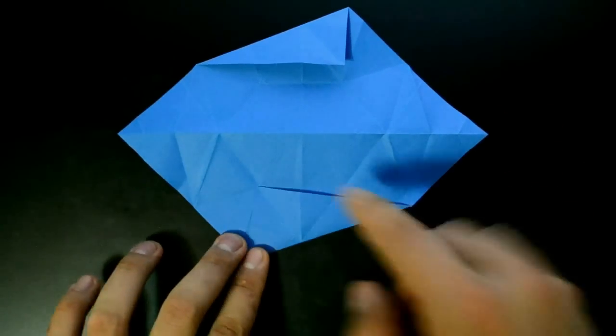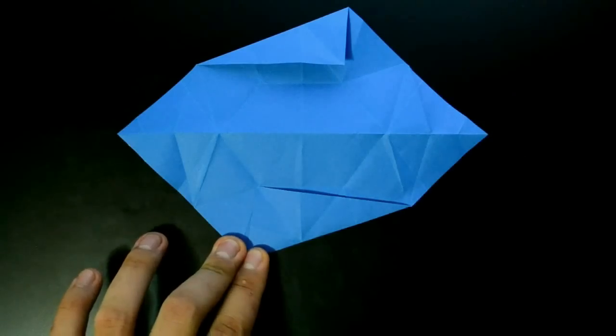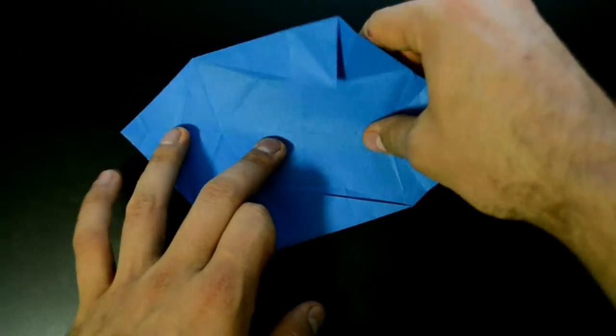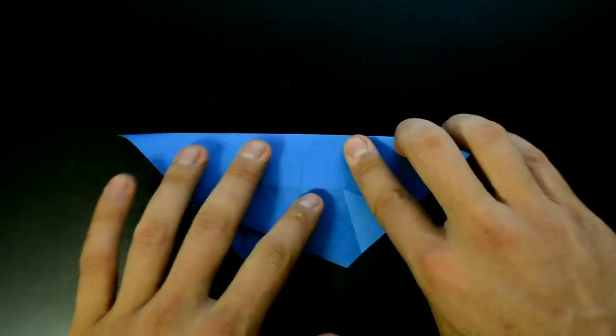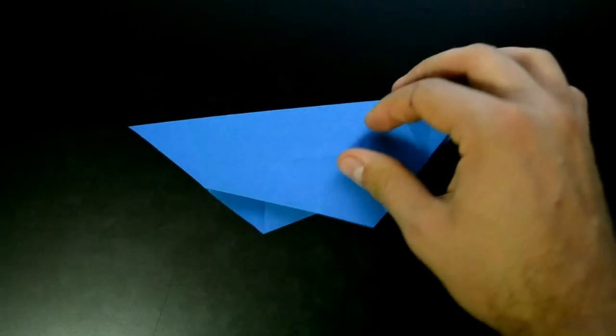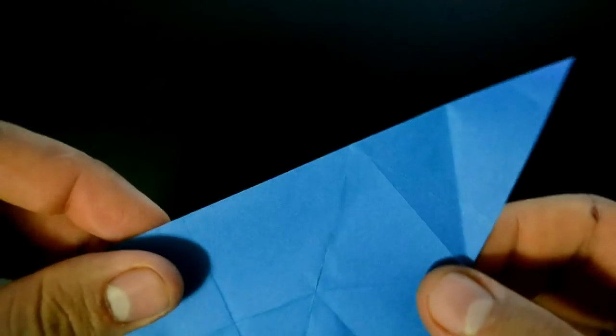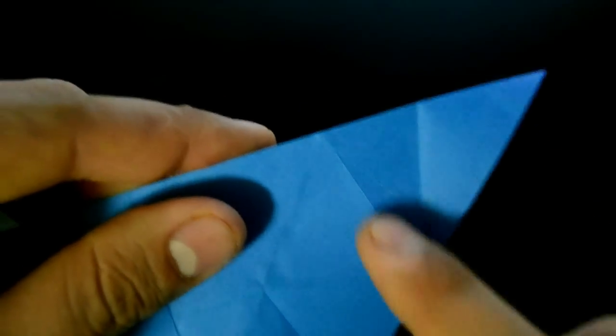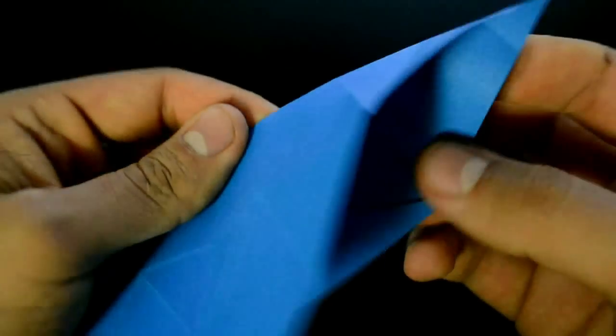Now fold in half in this line, making a valley fold. Reverse the right corner in this line here. Like that.